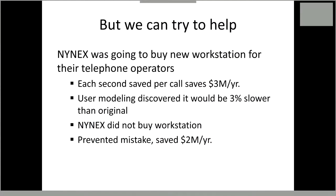So what does that mean? We can try to help. There's lots of bad design and we're not going to eliminate it, but we can do our best with what we work on. One example: 9x was looking to buy new workstations and used human modeling — a traditional HCI method — to understand what human behavior with the new versus old workstations would look like. They found the new workstation was going to be 3% slower. In the 80s, that was $2 million a year — a prevented mistake. That's what you can do with good HCI and design work.